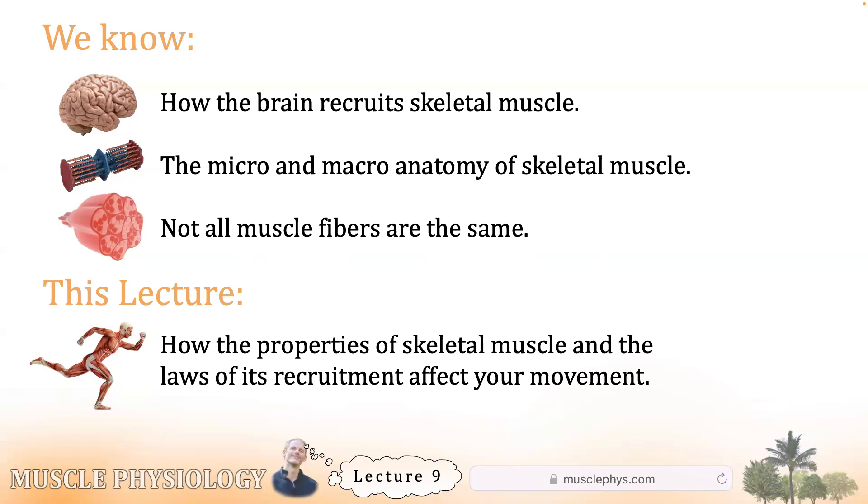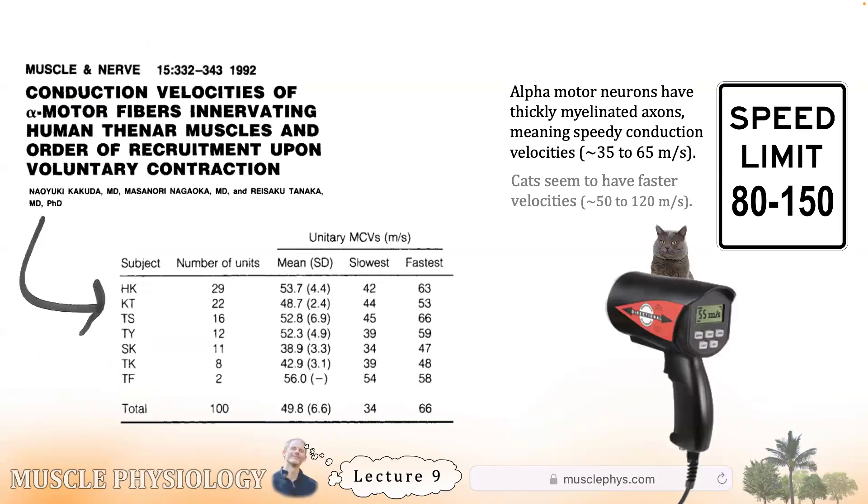Today we'll talk about the laws of muscle recruitment, how the neural component and the cellular properties interact. So let's begin with the motor neurons themselves. In the last lecture, we covered the different muscle fiber types. Not all muscle fibers are the same. And accordingly, not all alpha motor neurons are the same either.